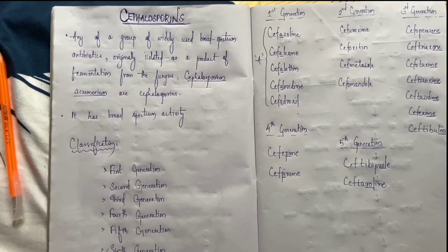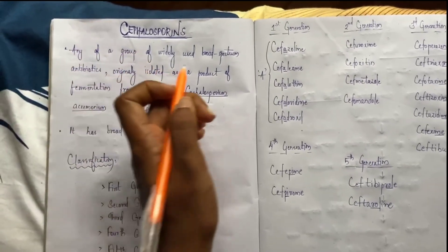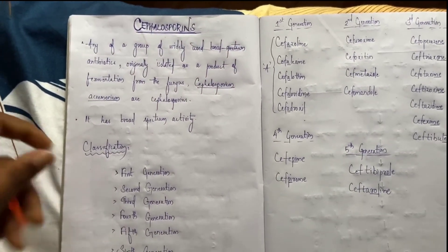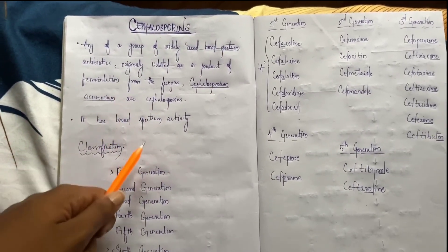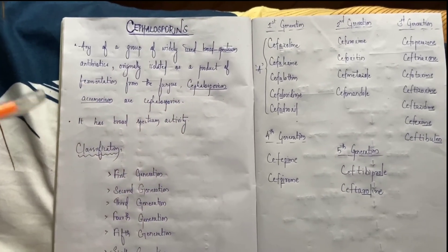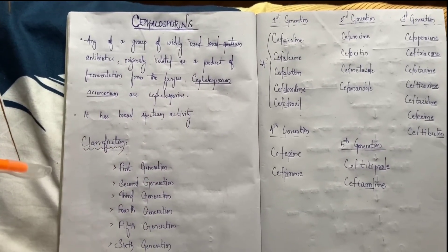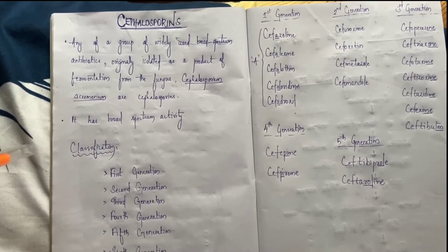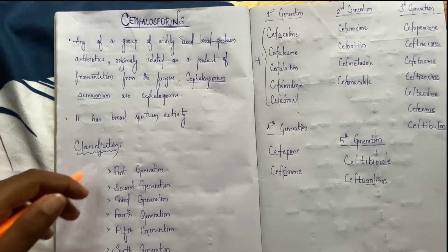Let's look at this group of widely used broad-spectrum antibiotics. Cephalosporins were originally isolated as a product of fermentation from the fungus Cephalosporium acrimonium. This antibiotic has broad-spectrum activity.